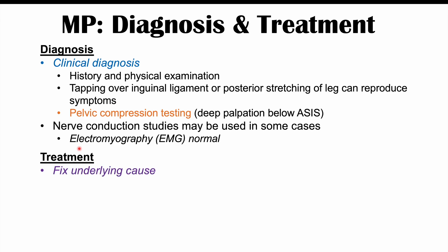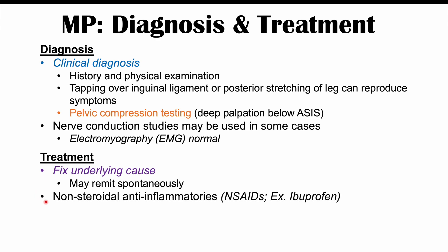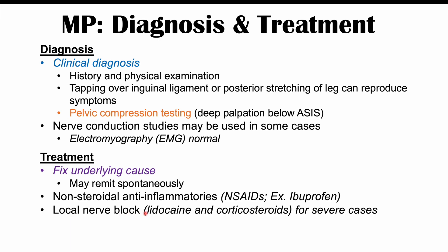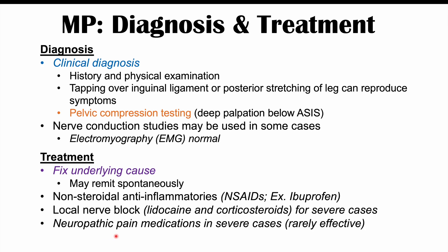Treatment focuses on fixing the underlying cause — losing weight if due to obesity, better-fitted clothing if due to tight clothing, or treating the thyroid condition if caused by hypothyroidism. In some cases, the condition can remit spontaneously on its own. Other treatments include non-steroidal anti-inflammatories such as NSAIDs like ibuprofen; a local nerve block using a mixture of lidocaine and corticosteroids for severe cases; neuropathic pain medications like gabapentin, though these are generally rarely effective; and in rare cases, surgical decompression of the LFCN.